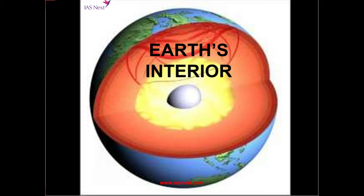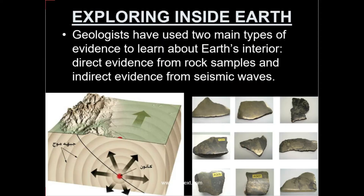But still, if we want to know about the earth interior, there are some direct and indirect sources that give us a fair idea about how earth interiors look like. Scientists have a fair idea how earth interiors look like, and the basis behind that is there are two types of evidences: direct evidences and indirect evidences.